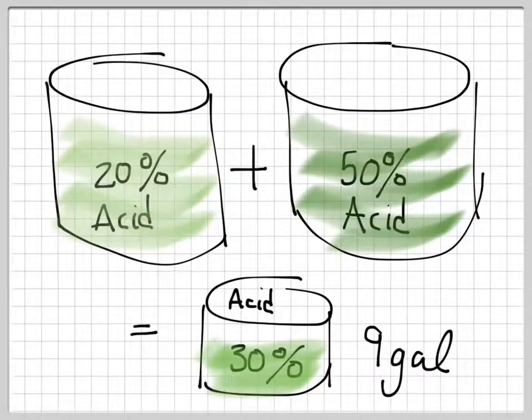Let's look at another question. So the last type of question we're going to do is what we like to call a mixing question. The premise is that you have some amount of two things that have something in common, like two types of acid solutions or possibly two types of paint that have a certain amount of pigment in them. You're given the percentages of the thing that's in the solution. So here we have 20% acid and we have 50% acid, and we're going to mix these two things together, and at the end what we want is 9 gallons of 30% acid.